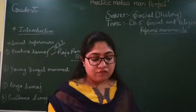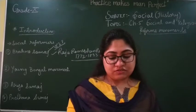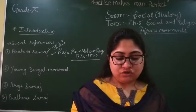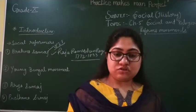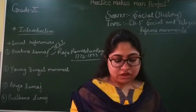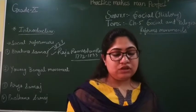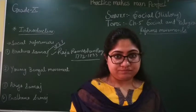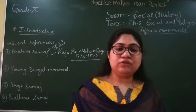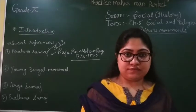The Governor General William Bentinck brought in the law prohibiting the sati system in 1829. Raja Ram Mohan Roy tried to develop rationalism among the common people through journalism. He published a journal named Sambad Kaumudi in the Bengali language. Now, some important aspects of the Brahmo Samaj: it advocated monotheism.